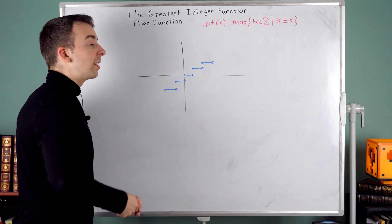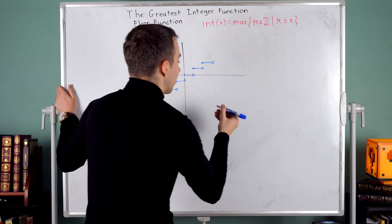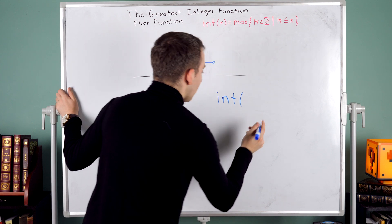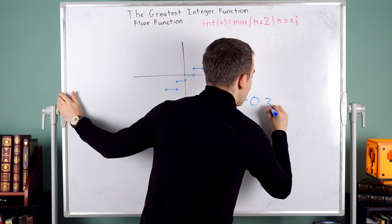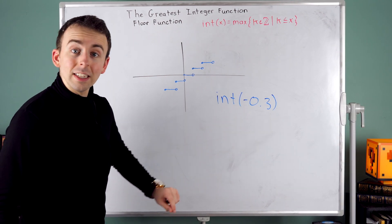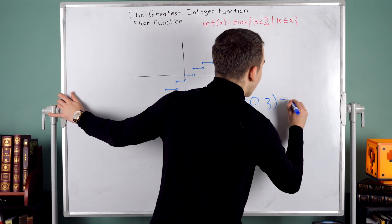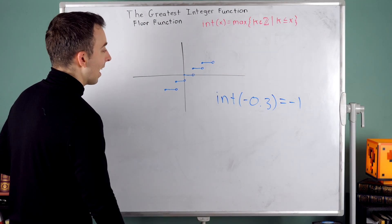Similar things happen going into the negative direction. If you want to see some quick examples of the negative inputs, what would int of negative 0.3 be? Well, the greatest integer that's less than or equal to this one is negative one. And so it gets rounded down to negative one.